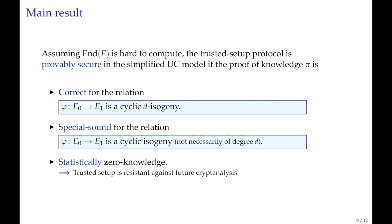Hi everyone. You've seen how the Trusted Setup process works at a high level. In our work, we formalize this approach, and we prove it secure in the simplified UC model, assuming that computing endomorphism rings is a hard problem. We need to assume that, because if that were an easy task, then there would exist no secure at all.